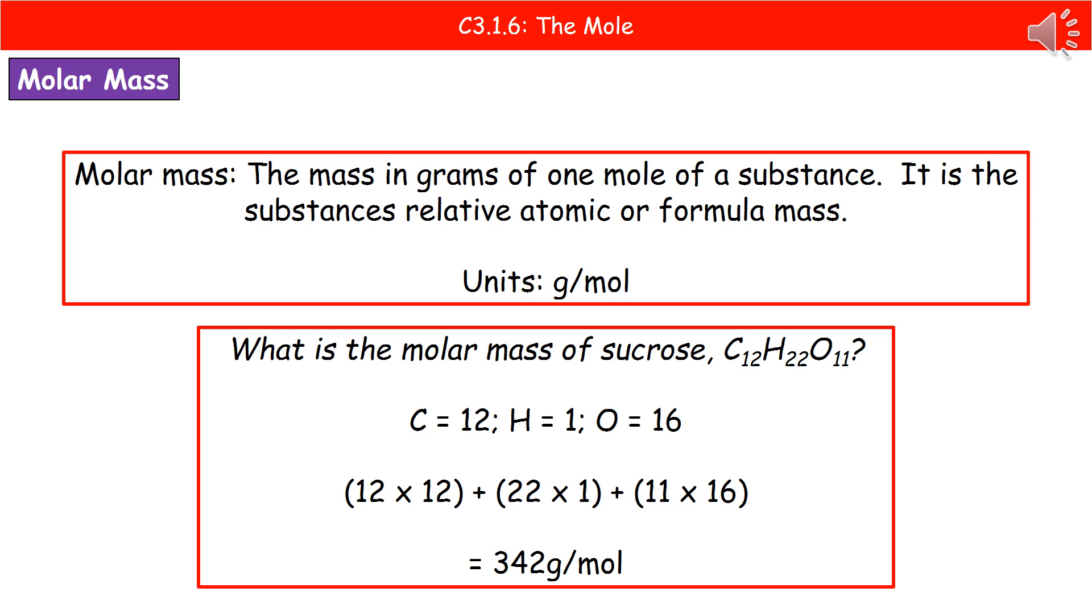So carbon's is 12, hydrogen is 1 and oxygen is 16. Then what we need to do is obviously multiply the atomic mass by the number of each atom there are. So 12 times 12 for our carbon and add that on to our 22 times 1 for hydrogen, and then add on our oxygen 11 times 16. And that then gives us a total of 342, and don't forget to include the units of grams per mole.